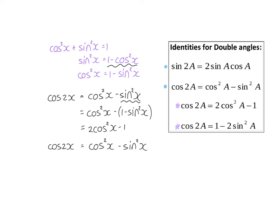We can also choose to substitute cos squared x with 1 minus sin squared x, and that gives us our third option for the cos double angle identity. So we have four new identities in total: one for the sin double angle, and three options for the cos double angle.